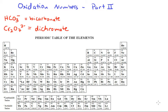Let's first look at the example of bicarbonate. Bicarbonate is a polyatomic ion which contains hydrogen, carbon, and oxygen atoms.